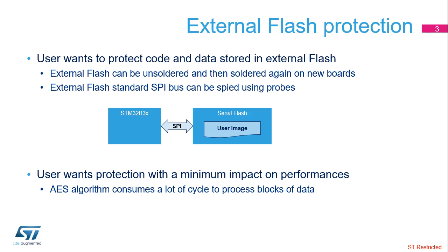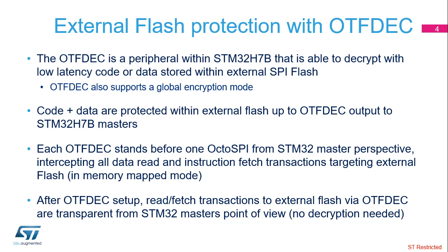The latency caused by the decryption should be minimized. The OTF-DEC has been designed to tackle these objectives. It is implemented in the STM32H7B line and is able to decrypt with low latency code and/or data stored within an external flash. It also supports an encryption mode. The encryption process must follow the sequence described in the reference manual. When encryption mode is selected, on-the-fly decryption for all regions is deactivated. Since the decryption is done internally by the microcontroller, the data transferred over the OctoSPI bus is encrypted, which is a countermeasure against flash unsoldering and bus spying.